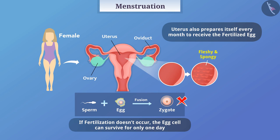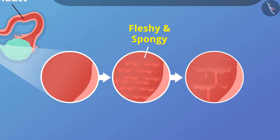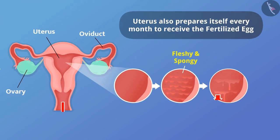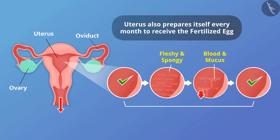Therefore, there is no need for the new layer when fertilization does not occur. This layer is slowly broken down and comes out from the vaginal tract in the form of blood and mucus, after which the uterine wall undergoes repair. This entire process is completed in about two to eight days and is repeated almost every month. This action is called menstruation.